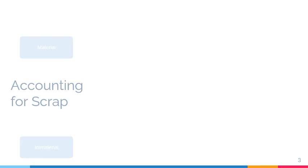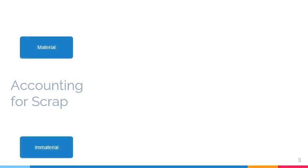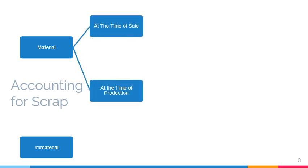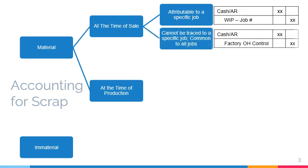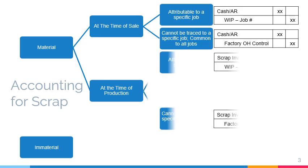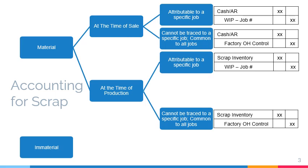Scrap may be material or immaterial. When scrap is considered material, it may be accounted for either at the time of sale or at the time of production. Scrap is often only recorded at the time of sale to minimize accounting. When scrap is traceable to a specific job, the sale is recorded as a deduction from or a credit to the job's work in process. If scrap is recorded at the time of production, scrap inventory is debited for the scrap's estimated pass of value.